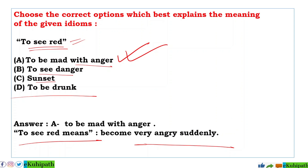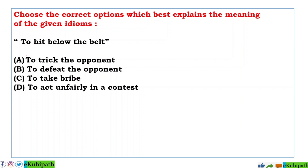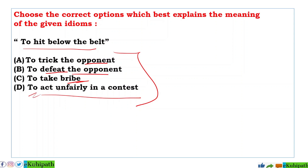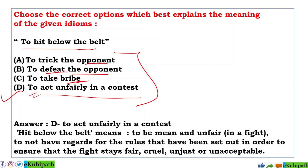Next idiom: 'to hit below the belt'. Options: A: to trick the opponent, B: to defeat the opponent, C: to take a bribe, D: to act unfairly in a contest. The correct answer is D. To hit below the belt means to be mean and unfair in a fight — not having regard for the rules set out to ensure the fight stays fair. It is cruel, unjust, and unacceptable.